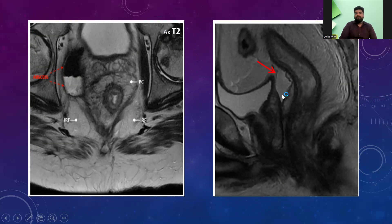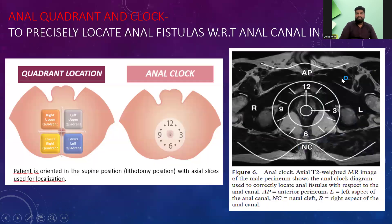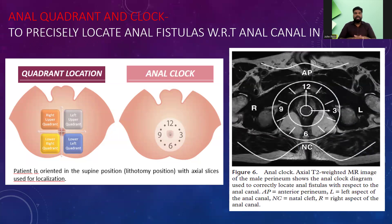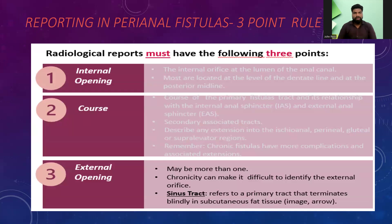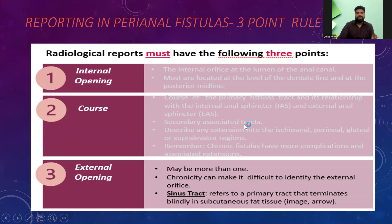Whenever marking an anal fistula, we have to locate it first quadrant-wise, then in the anal clock, following the position when the patient is in the supine lithotomy position. To better locate the fistula, three points must be included in the radiological report: the internal opening and where it opens in the lumen, the course and its relationship with the internal and external sphincters, any secondary associated tract extensions, and the external opening.